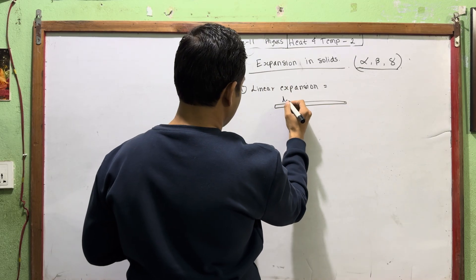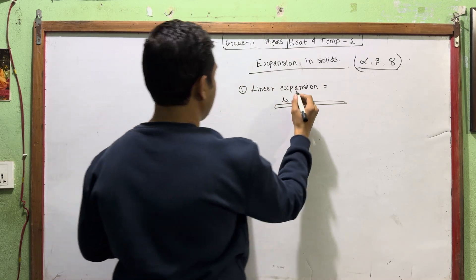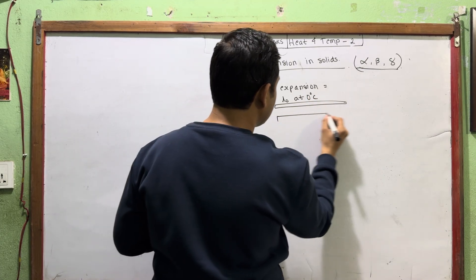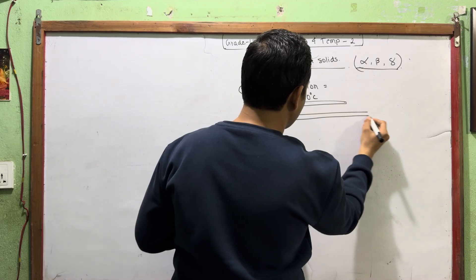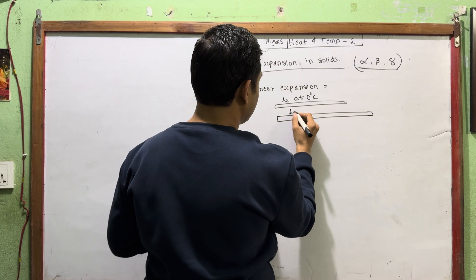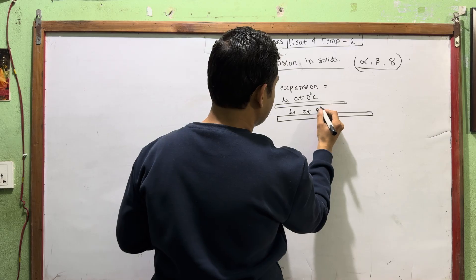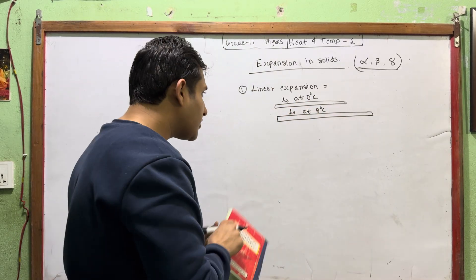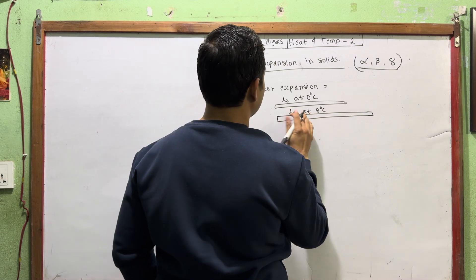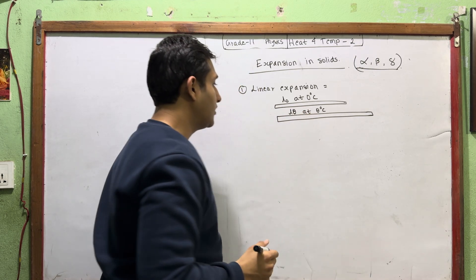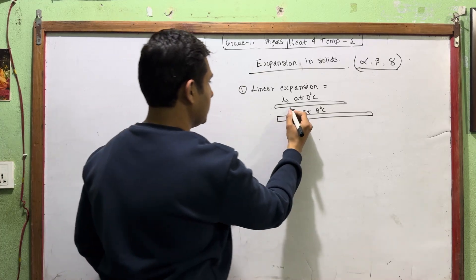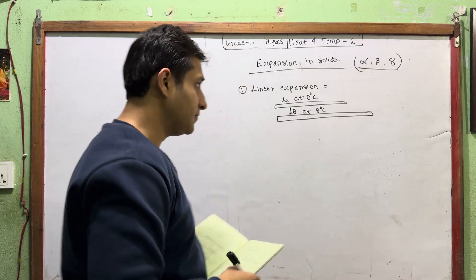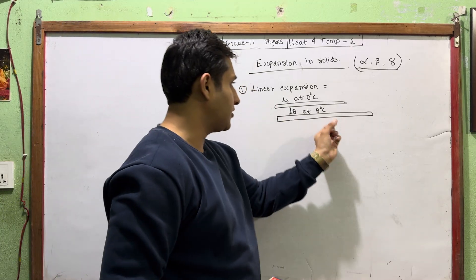It is a rod of length L₀ at 0 degrees Celsius. This is the initial length L₀ at 0 degrees Celsius. We also have L_θ at theta degrees. So let's explain this here. Let's explain that the length increases.